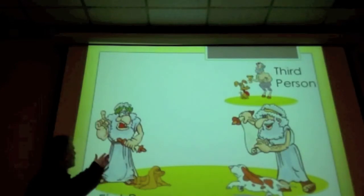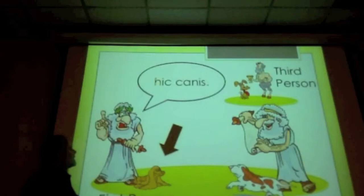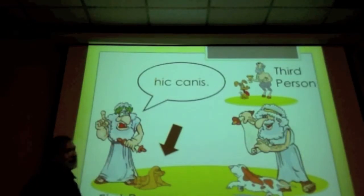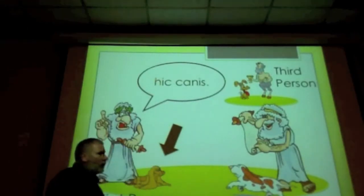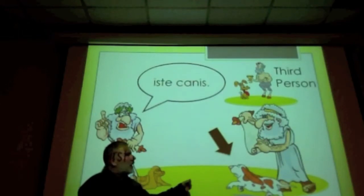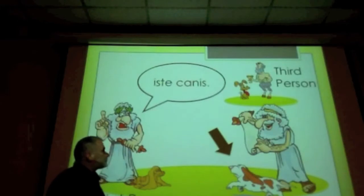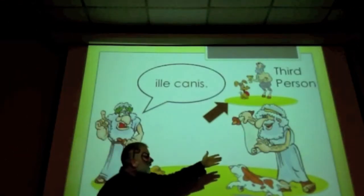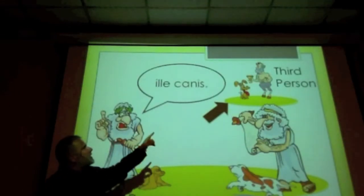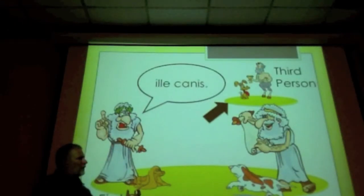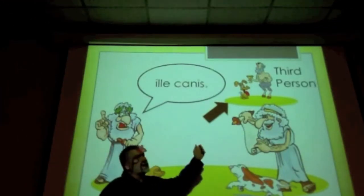Let's say the cranky poet wants to refer to a dog near himself — he'll say 'hic canis,' meaning 'this dog.' Canis is the Latin word for dog, and it's masculine. If he refers to a dog near the kindly poet, he'll say 'iste canis' — 'that dog' — using iste because the dog is near the second person. Finally, if he refers to a dog near the Saturn — the third person — he'll say 'ille canis.' So: things near the first person use hic; things near the second person use iste; things near the third person use ille.